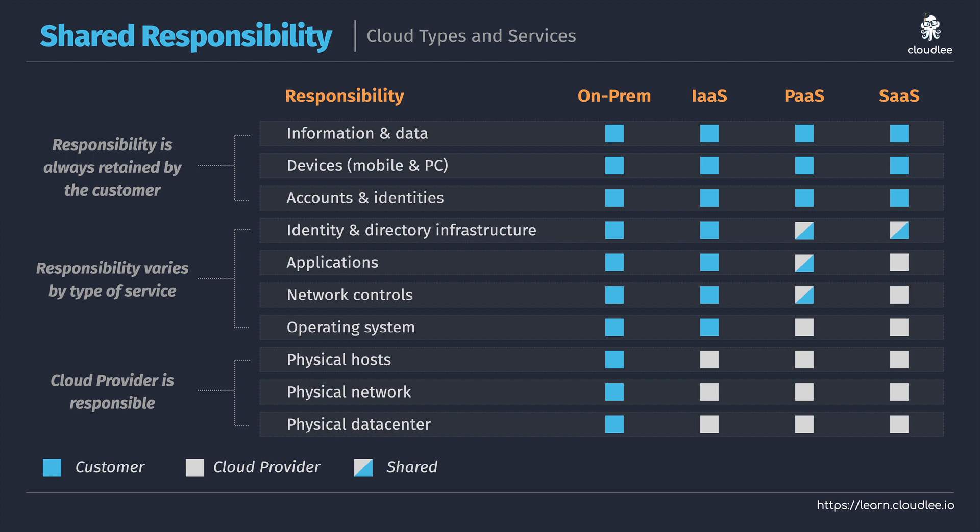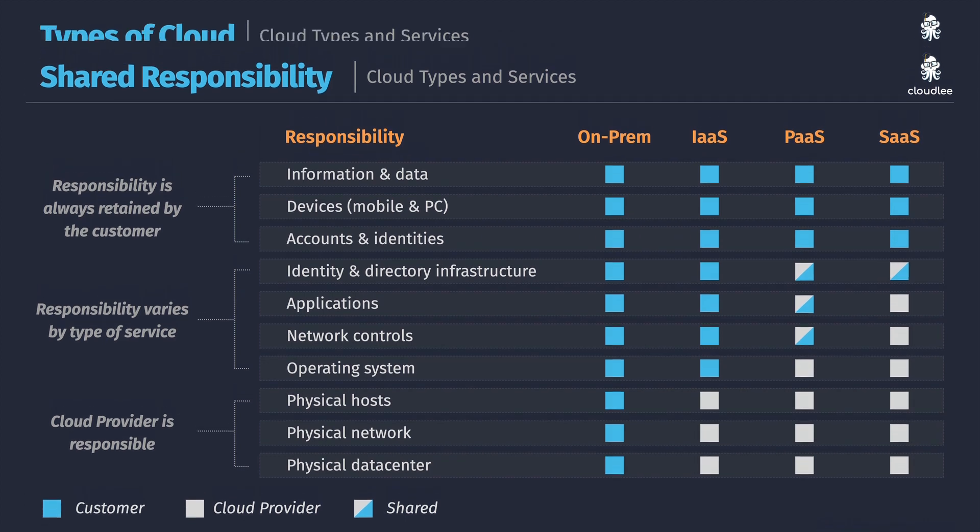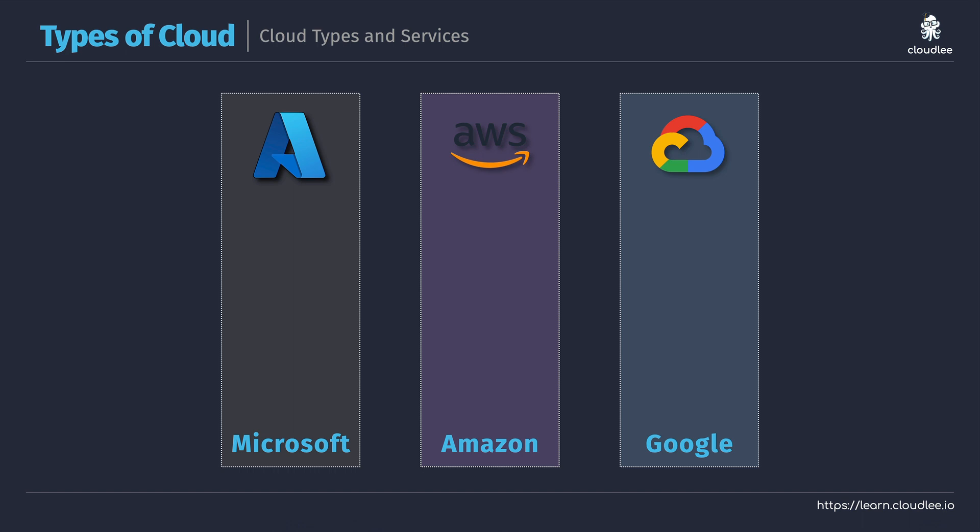That covers the different cloud service models and the responsibilities we should consider. The last thing to talk about are the different types of cloud. When you hear cloud, you're probably thinking of Microsoft Azure, Amazon AWS, or Google GCP. Each of these are examples of public cloud, because they provide all the properties a cloud provider needs to possess — broad network access, on-demand self-service, and much more.